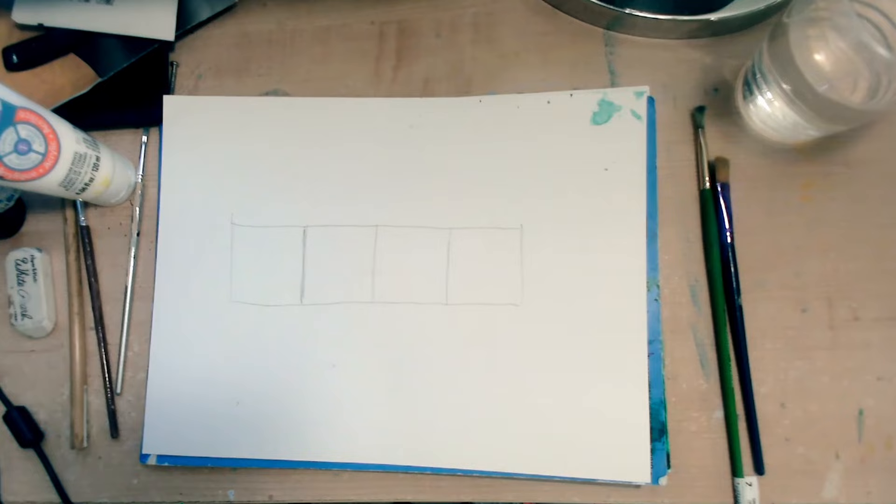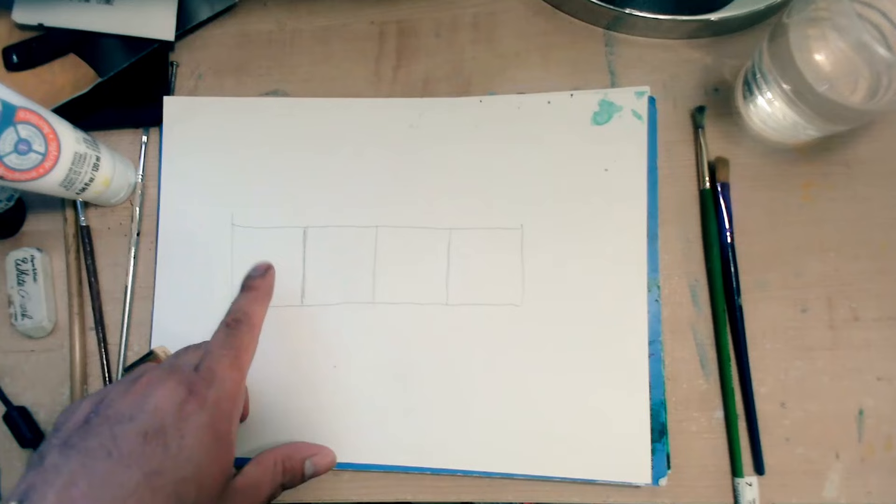You can use a ruler if you want. I'm just using my eyeballs. So now I have four squares. One, two, three, four.